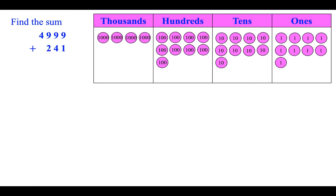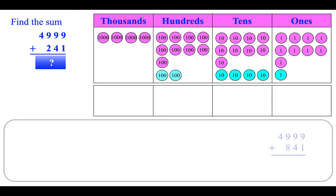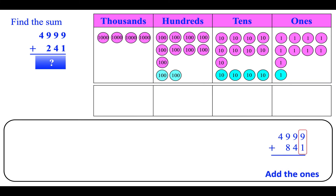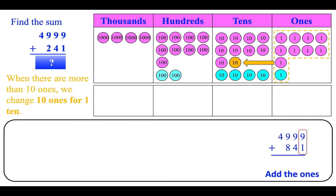Find the sum: four thousand nine hundred ninety-nine plus two hundred forty-one. Add the ones: nine plus one is ten. When there are more than ten ones, we change ten ones for one ten — we add one ten to the tens place; now we are left with none.